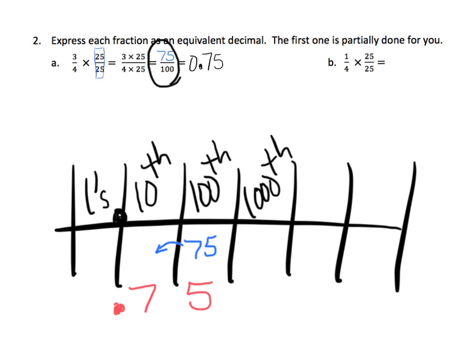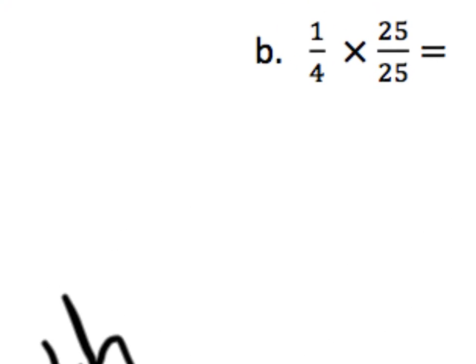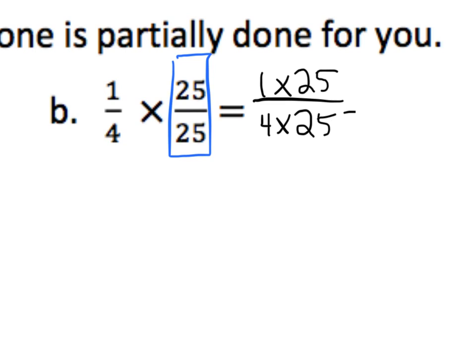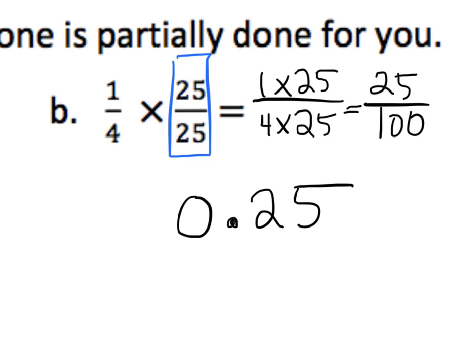Moving on to that next problem in the upper right-hand corner: we have 1 fourth times 1. That's one whole, so the value won't change. 1 times 25 is our numerator; 4 times 25 is our denominator, which gives us 25 one-hundredths, which gives us the decimal 0.25.